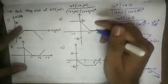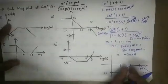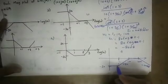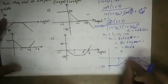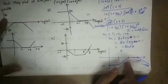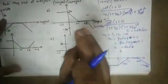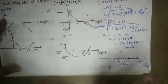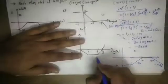We always consider the x-axis as omega, but here we have log omega on the x-axis. So the values are converted to log scale: log 1 is 0, log 10 is 1, log 100 is 2. This shifts the corner frequency values on the axis. So omega equal to 1 appears at position 0, omega equal to 10 appears at position 1, giving the magnitude plot in log omega scale.